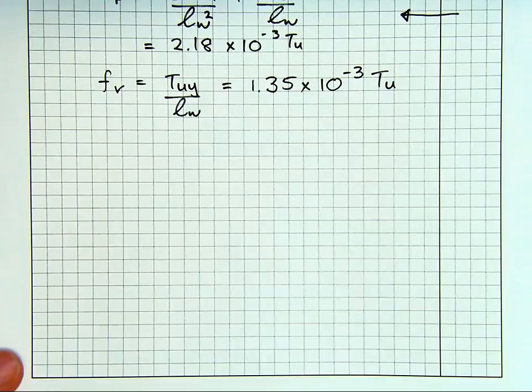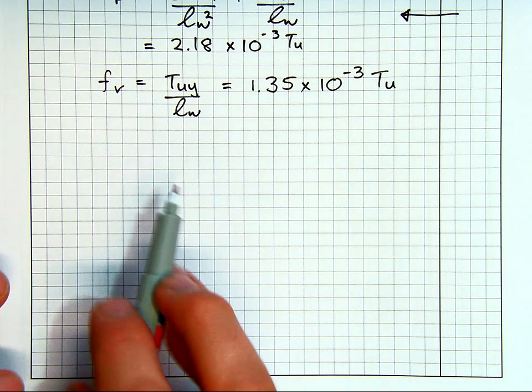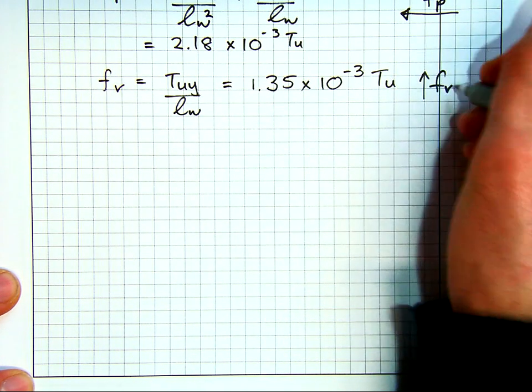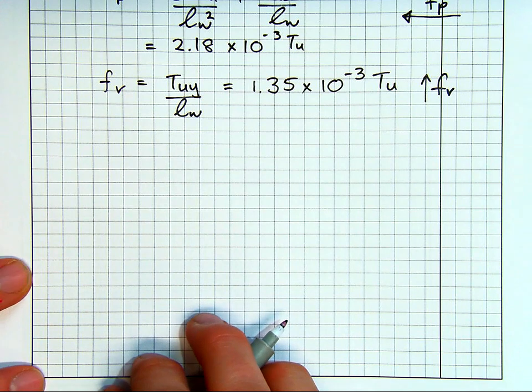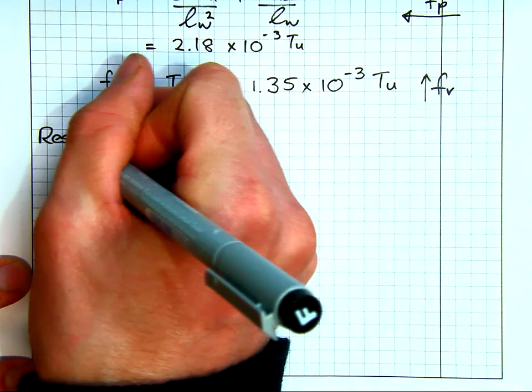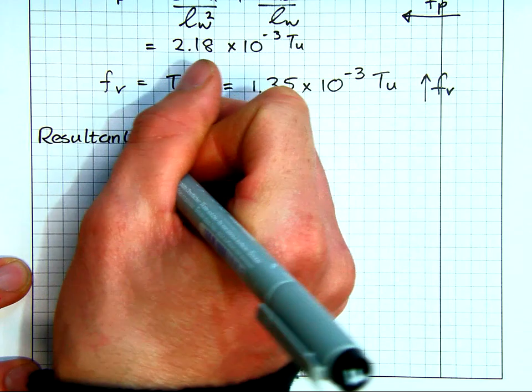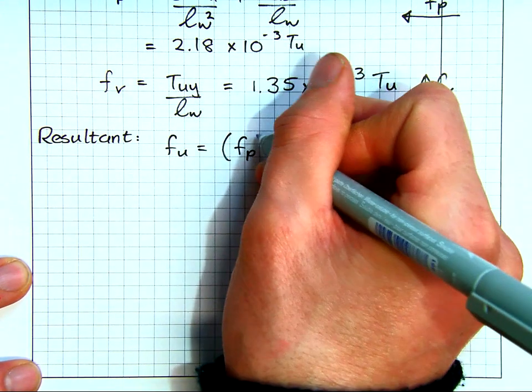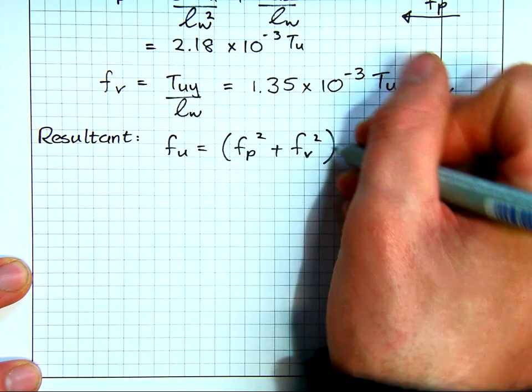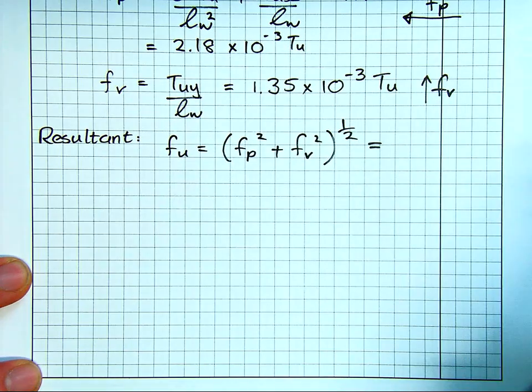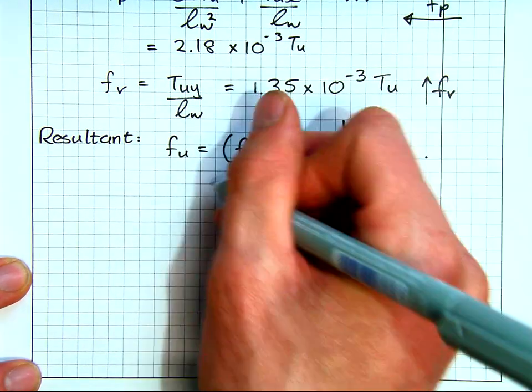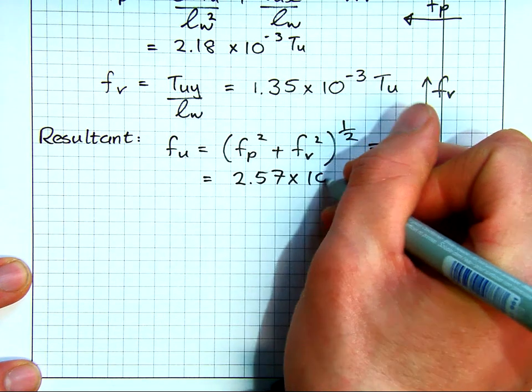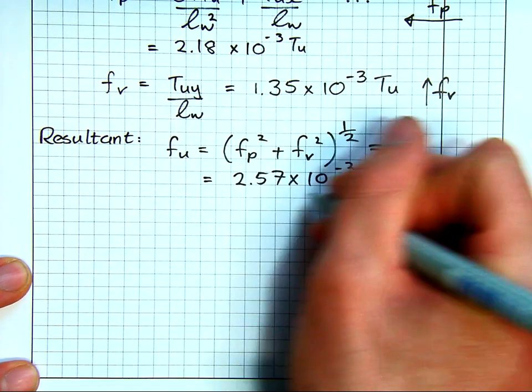As I said, I'm not showing all my workings just so we don't spend our lives writing stuff down. Now that we've got our force perpendicular, our force vertically, we can now solve for our resultant. Just using Pythag and then if we do that, we have this force in terms of Tu.